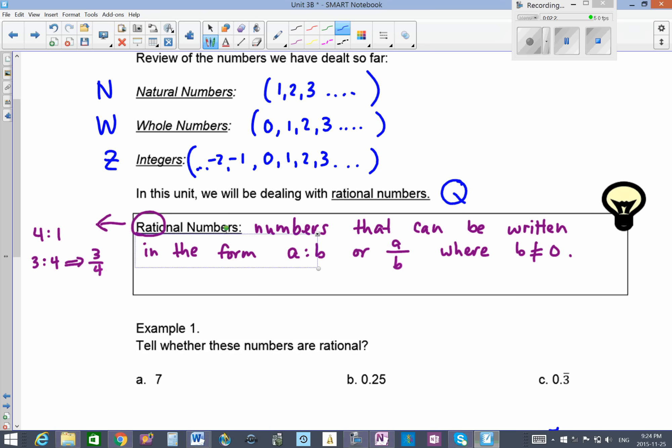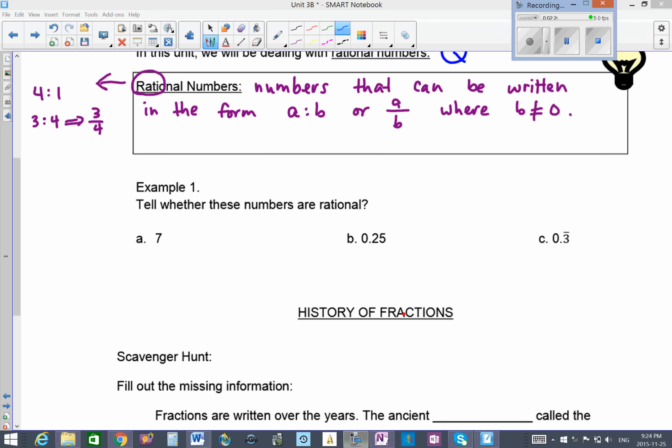Rational numbers are numbers that can be written in the form A over B, where B cannot be 0. We know that B cannot be 0 because any division by 0 would not make sense. Tell me whether these numbers are rational. Can we write 7 in the form A over B? Definitely. We can write 7 over 1, and it's still equal to 7. So yes, this is a rational number.